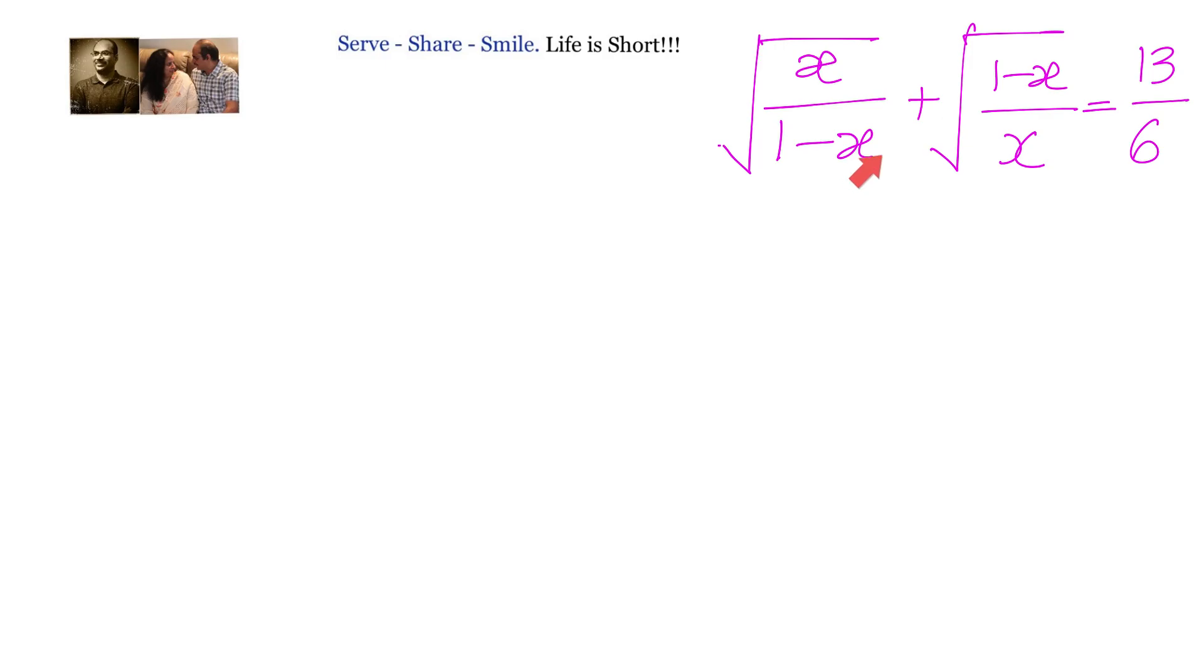Now, if we observe carefully, x by 1 minus x and 1 minus x by x are reciprocal to each other. So let us go ahead and take that into another variable p. We will write down square root of x by 1 minus x.